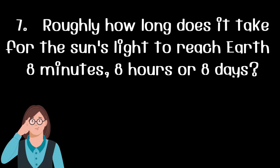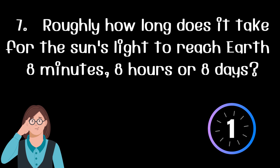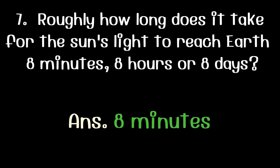Roughly how long does it take for the sun's light to reach Earth — 8 minutes, 8 hours, or 8 days? 8 minutes.